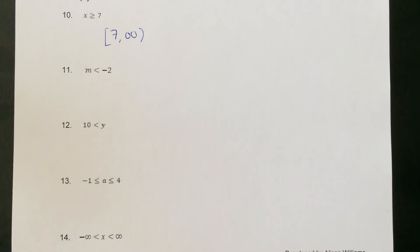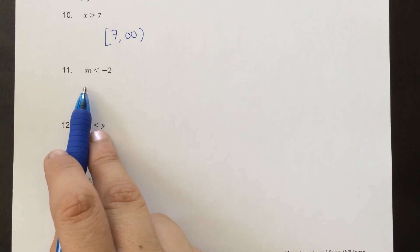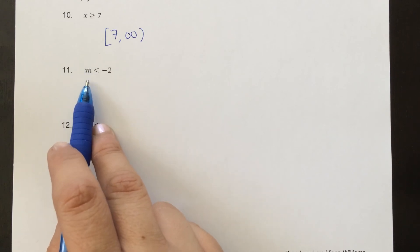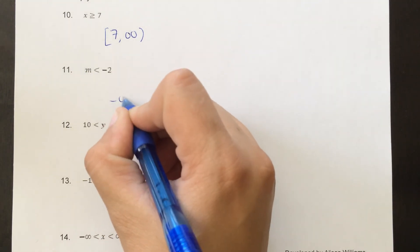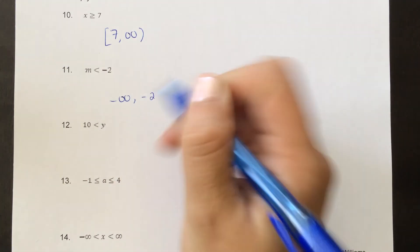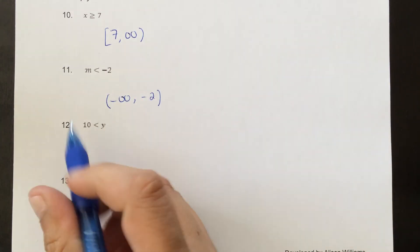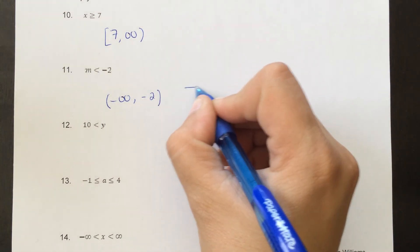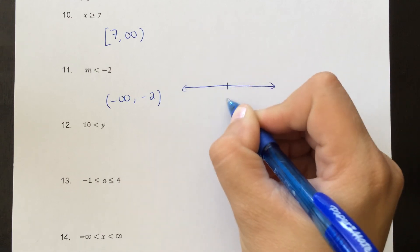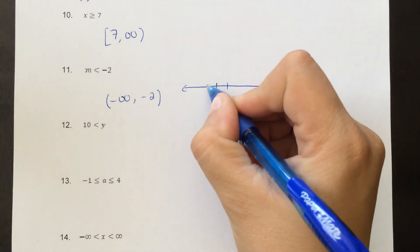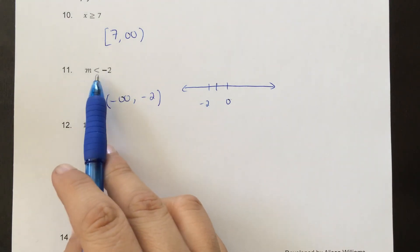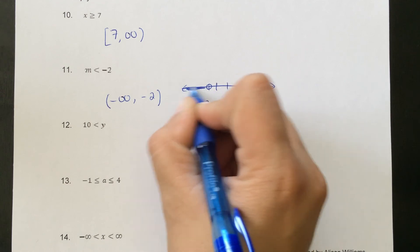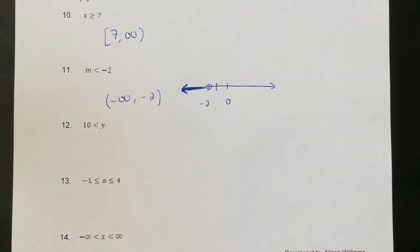For m is less than negative 2, all numbers less than negative 2 but not including negative 2. This goes to negative 10, negative 100, or negative infinity — so we write parenthesis negative infinity up to negative 2, parenthesis around both. We could also graph this: on a number line at negative 2, we'd use an open circle going to the left — or a parenthesis as shown before.